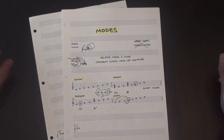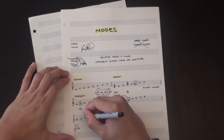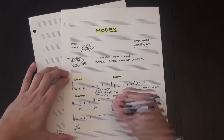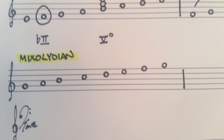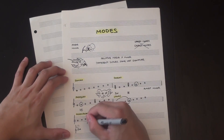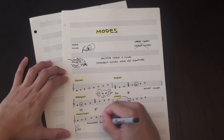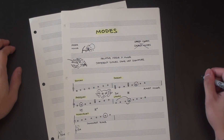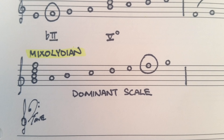Moving on to G, we get to Mixolydian, which is a major scale with a flat 7th. This can be thought of as a dominant scale, because the tonic 7th chord is a dominant 7th. Dominant scales are a really important subset of scales, especially for improvisation, but we'll get to that later.